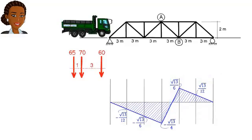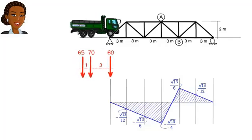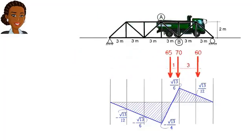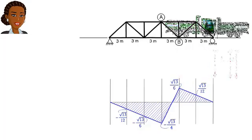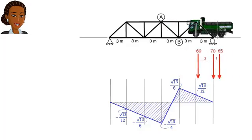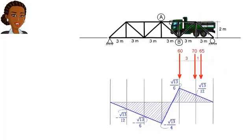By visually inspecting the diagram, we can conclude that the maximum tensile force in AB occurs under one of two loading scenarios. This scenario, where the truck is facing to the right and the rear axle is on top of joint B, or this scenario, where the truck is facing to the left and the front axle is on top of B.